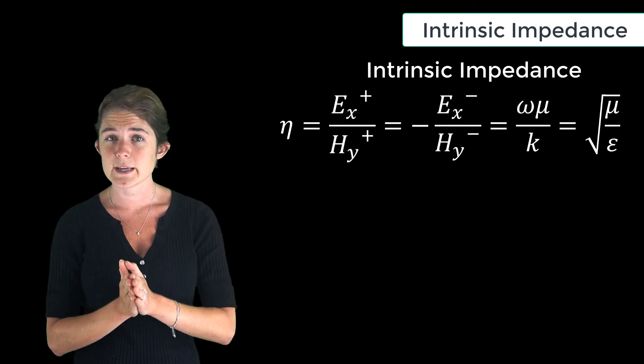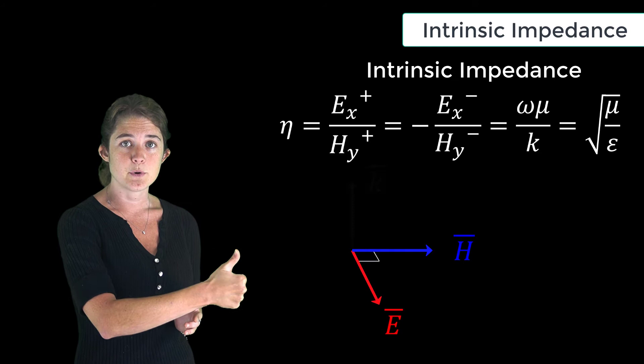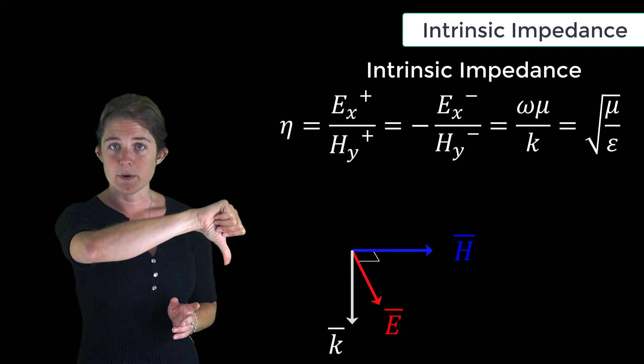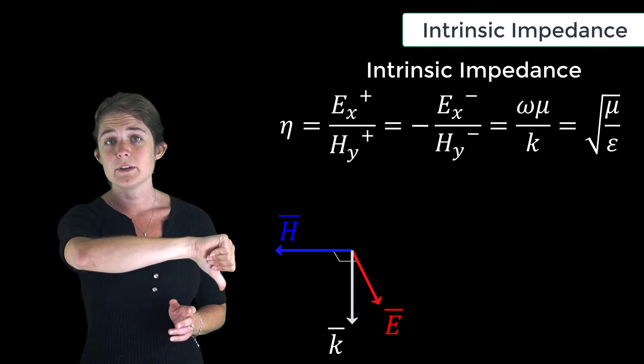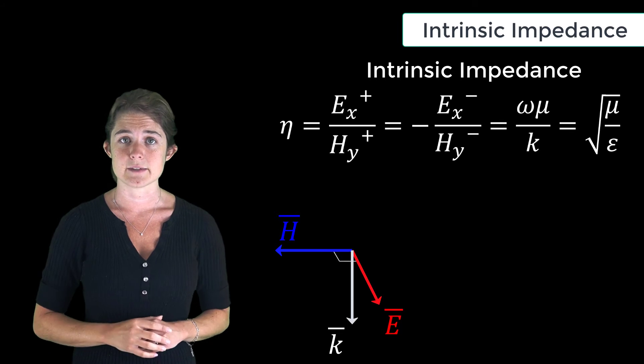If you think about this, the sign flip here is actually pretty easy to intuitively understand. Recall E cross H points in the direction of propagation. The direction of propagation is opposite for the backward wave, so the direction of one of the fields had to flip—that 180-degree turn is where the negative sign comes from.